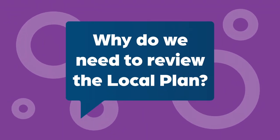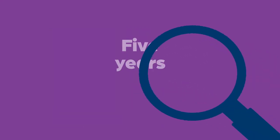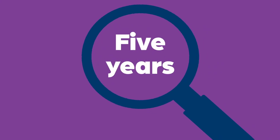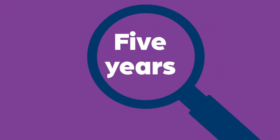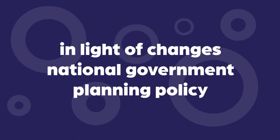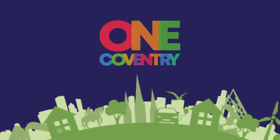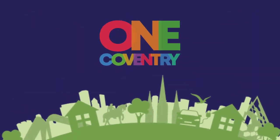Why do we need to review the Local Plan? Policies of the adopted Local Plan and the Area Action Plan should be reviewed every five years to see if they are up to date or if they need adjusting to reflect changes to national policy or other matters, and this is what we are now doing. We need to consider the review of the plan in light of changes to national government planning policy and the Council's priorities, including the One Coventry Plan and the Emerging Climate Change Strategy.